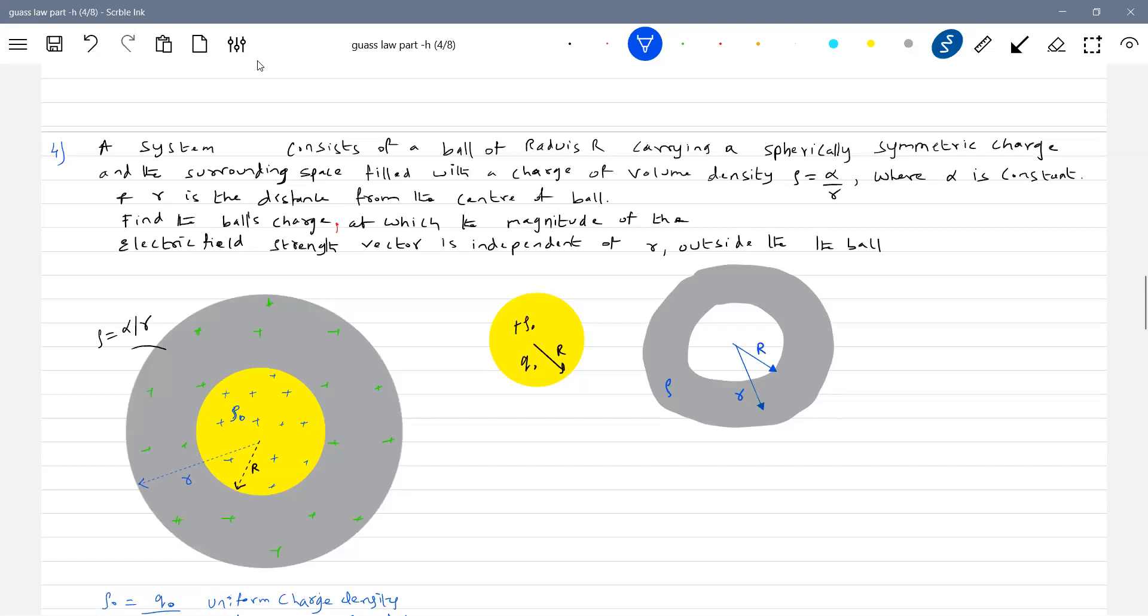Now we'll calculate the field strength here. So first the field strength here at point P. I hope you are able to imagine like this. What is the magnitude of electric field strength here must be constant.